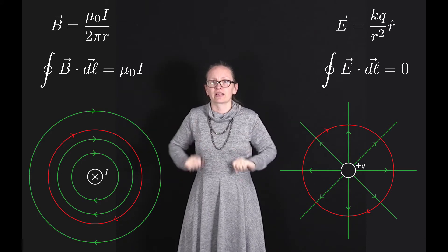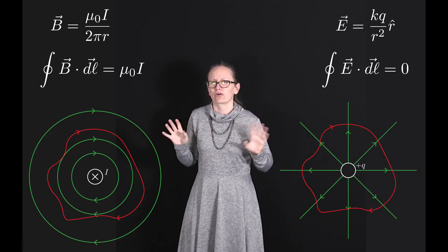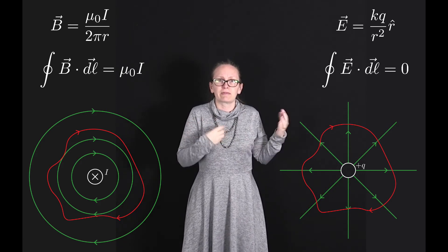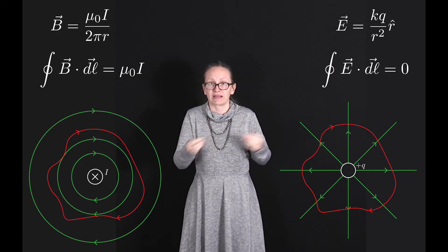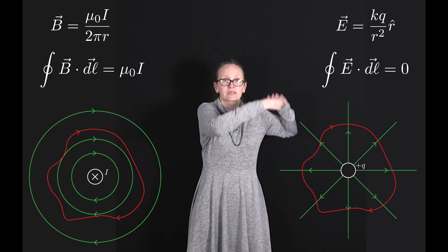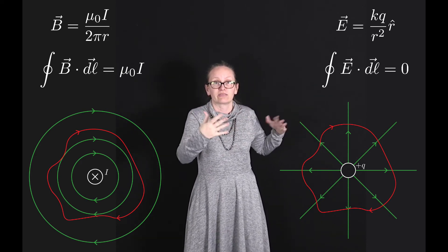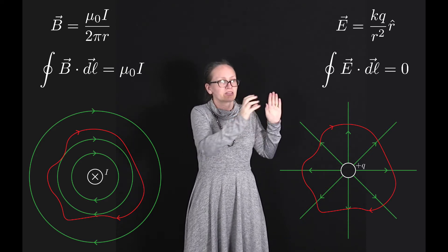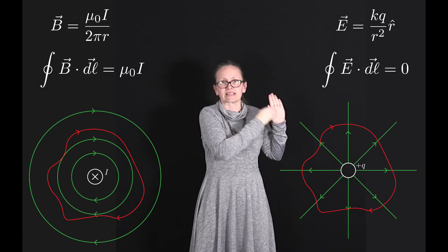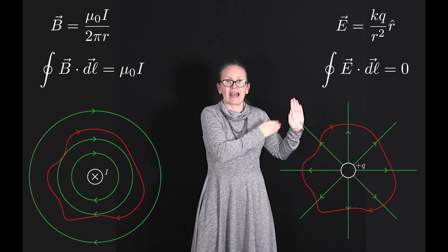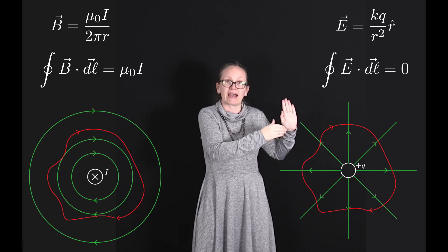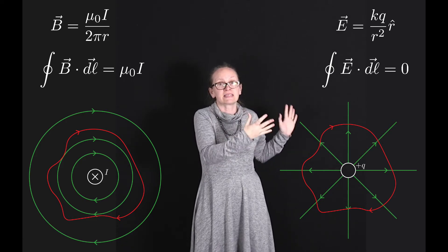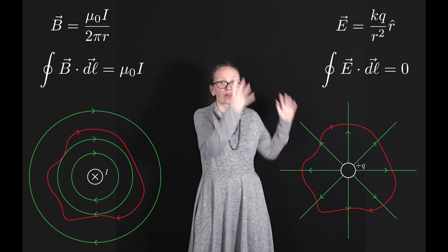That was for circular paths. What about more complex paths? For the electric field case, we've seen this before when calculating work done by the electrostatic force. The tangential parts are still perpendicular to the electric field, so they contribute zero. For the radial parts, we end up at the same radius we started at — contributions going outward cancel those going inward — so the integral of E·dL around the closed loop is still zero.